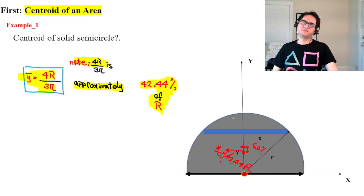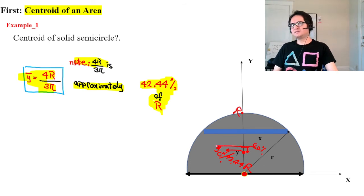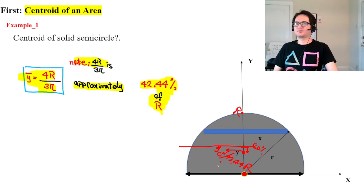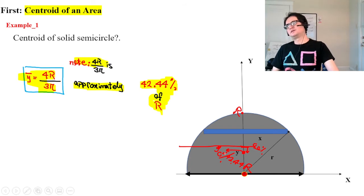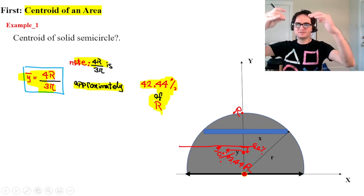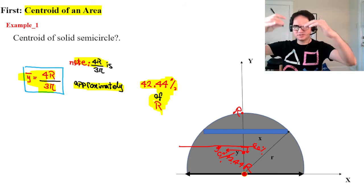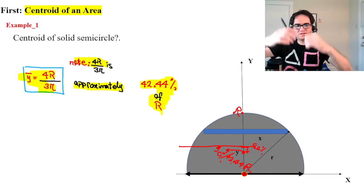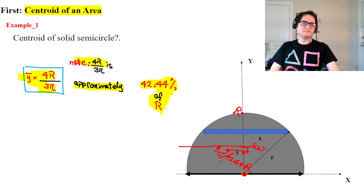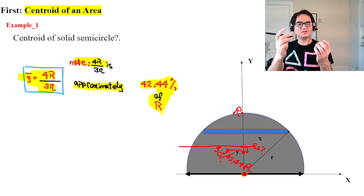So the centroid y-component is located just below the 50% mark — specifically at 42.44% of the radius. This is because the extra mass closer to the base drags the centroid downward toward the base of the semicircle.